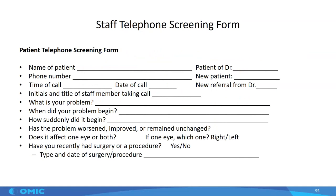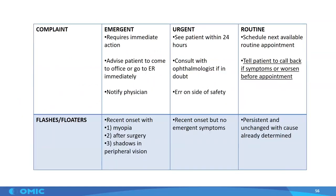Here's an example of the screening guidelines in that document. We gave categories of emergent, urgent, and routine complaints and what to do about them. Some ophthalmologists don't consider flashes or floaters to be emergent and put those in the urgent category. Some feel it's emergent if the patient has myopia, because myopic patients have a long eye and are at greater risk for detachments. After surgery, again, there's a risk of retinal detachment, or if the patient has shadows in peripheral vision along with recent onset of flashes and floaters. If there are no emergent symptoms, ophthalmologists might want to see patients within 24 hours, and persistent unchanged flashes and floaters can be given a routine appointment. Patients should always be told to call back if symptoms worsen before their appointment.